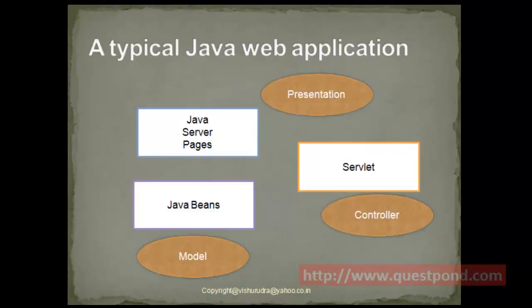Before the advent of EJB, a typical Java web application consists of Java Server Pages and Servlets as well as Java Beans. The Java Server Pages were mainly used for presentation, while the Servlet took care of the controller part — that is, deciding which next page to show to the user based upon the current request. Getting data from persistent systems like a database was taken care of by Java Beans, which were also known as the model. So a typical application consists of all these three things interacting with each other.